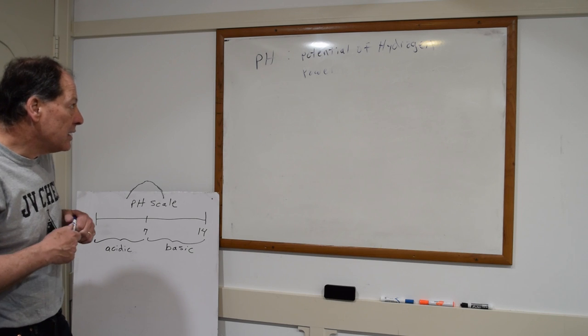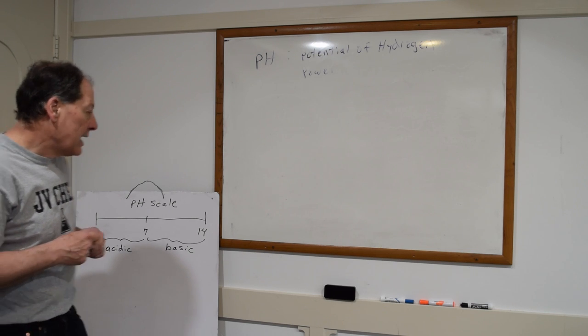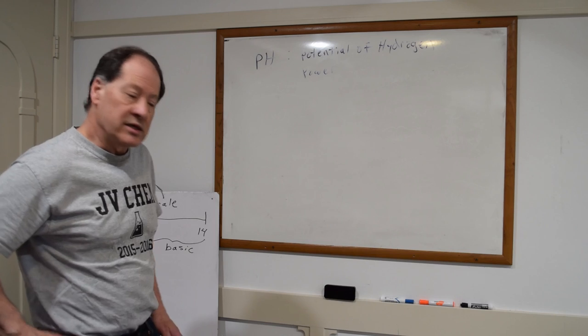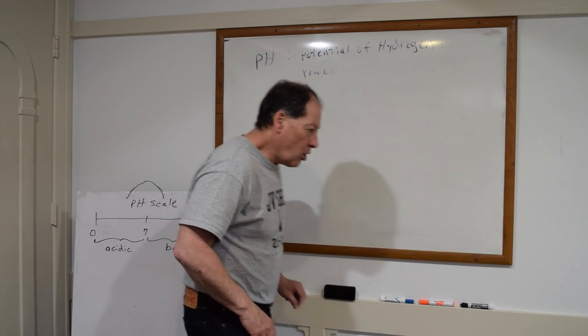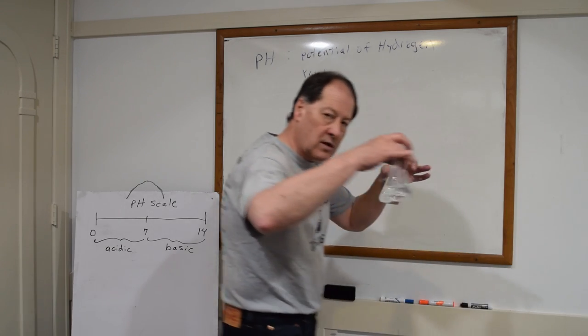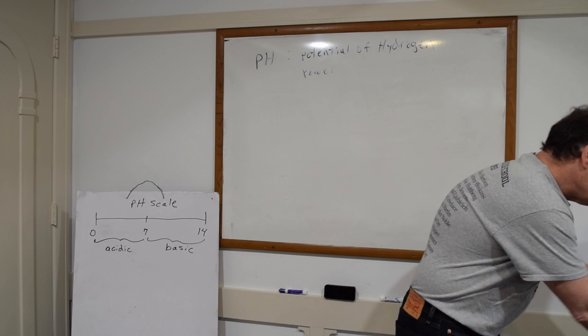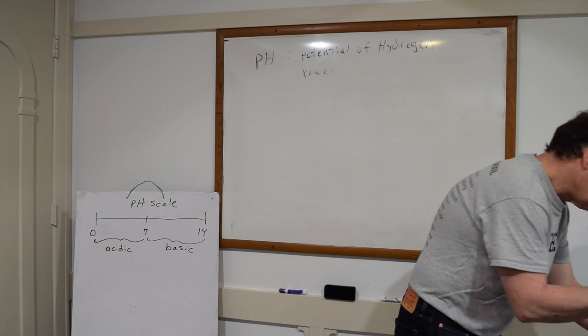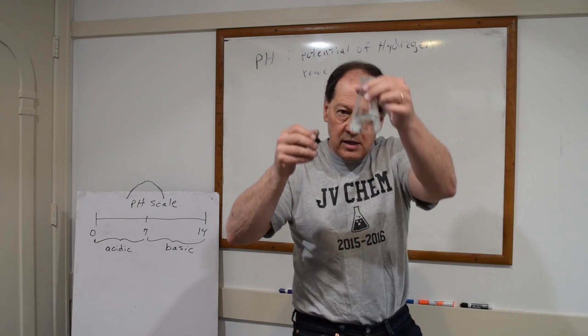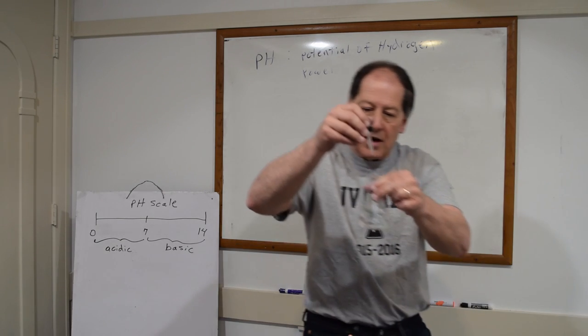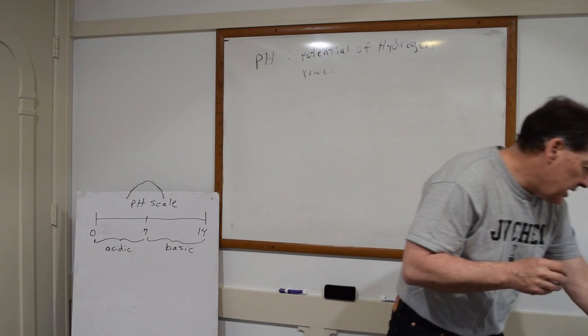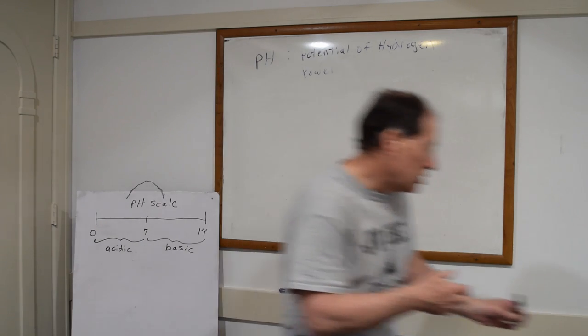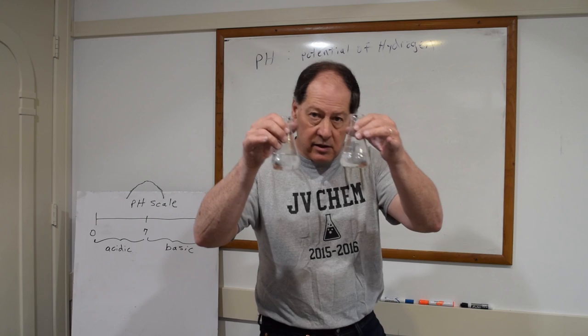So let's just do a couple of quick demonstrations on video with the pH scale. And then I want to show you how to do some calculations. So I've got some water in a couple of different flasks. And I'm going to put some phenolphthalein in each of them. Just a couple of drops of phenolphthalein in water. If you remember, phenolphthalein turns pink only when it's a basic solution. So water is neutral, so it is not a basic solution. So it's clear.